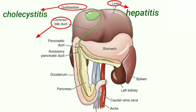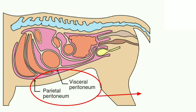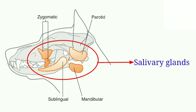Inflammation of the bile duct is known as cholangitis. Inflammation of the pancreas is known as pancreatitis. Inflammation of the spleen is known as splenitis. Inflammation of the peritoneum is known as peritonitis. Inflammation of the salivary gland is known as sialadenitis.